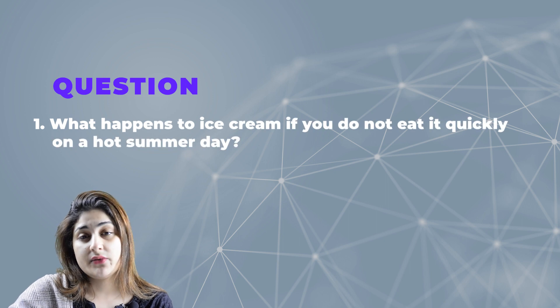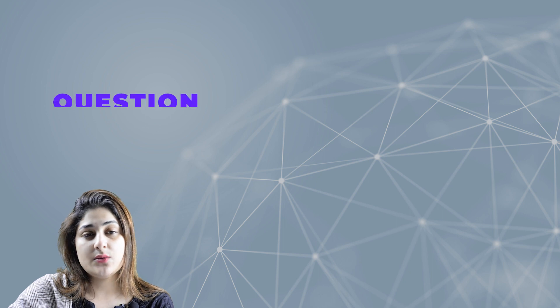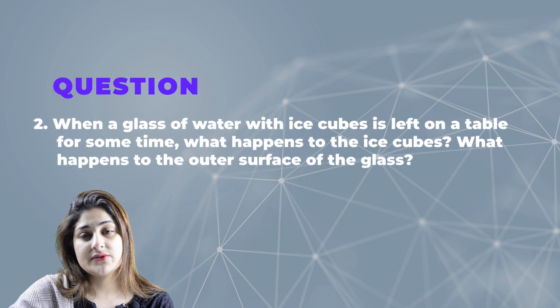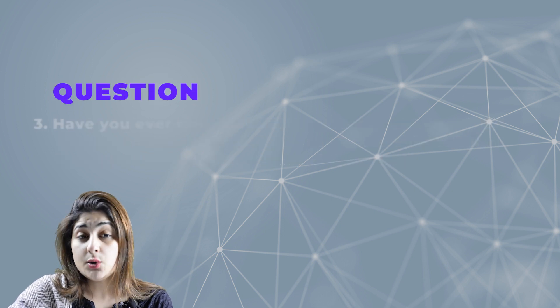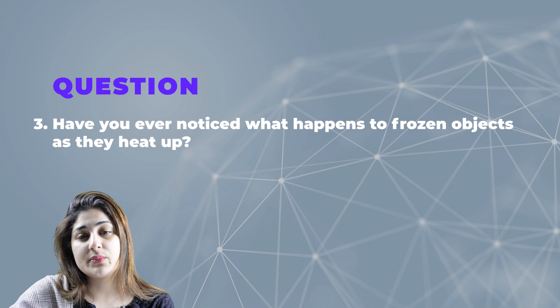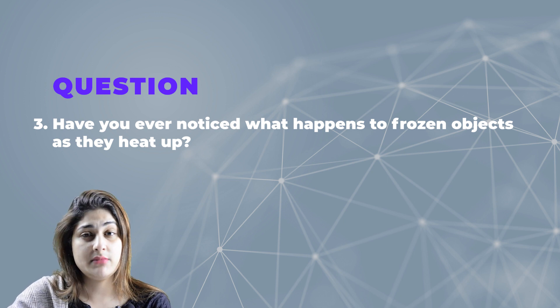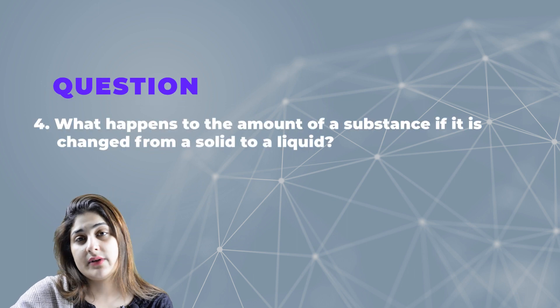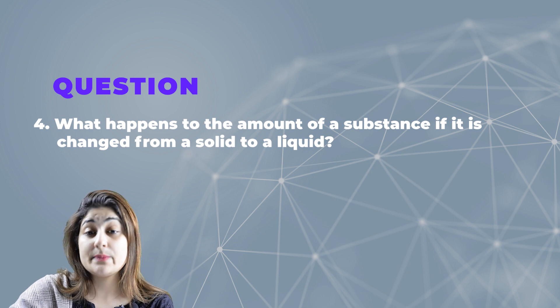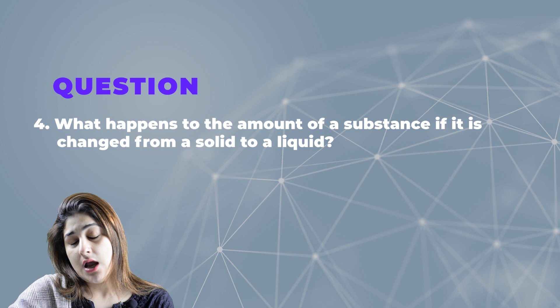Let's move towards a few questions I want you all to think about and respond to in the comment box. The first one: what happens to ice cream if you do not eat it quickly on a hot summer day? Second: when a glass of water with ice cubes is left on a table for some time, what happens to the ice cubes, and what happens to the outer surface of the glass? Third: have you ever noticed what happens to frozen objects as they heat up? And lastly, what happens to the amount of a substance if it is changed from a solid to a liquid?